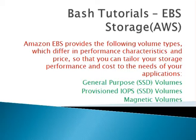Elastic Block Storage provides different volume types which differ in performance characteristics and price, so that you can tailor your storage performance and cost to the needs of your application. When you are creating an EBS storage, EBS storage will be of three types: General Purpose, Provisioned IOPS, and Magnetic volumes. EBS is your Amazon-backed storage.